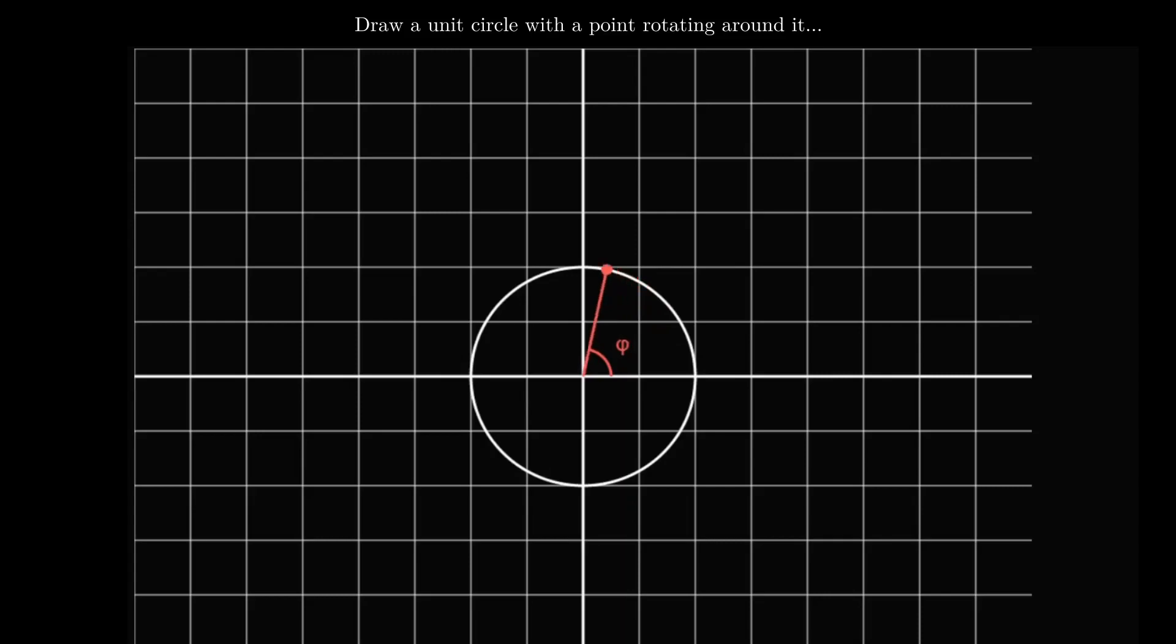Now imagine a point rotating around that circle. We'll call its angle relative to the x-axis by the Greek letter phi, which is that squiggly line thing.